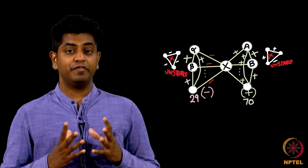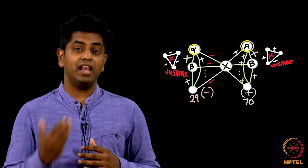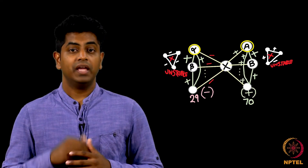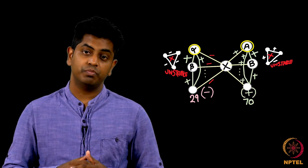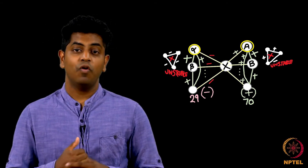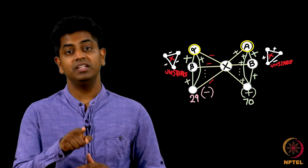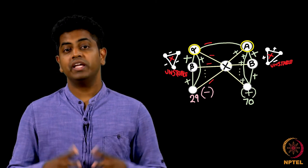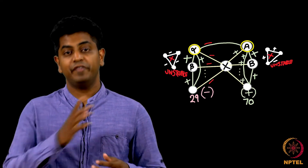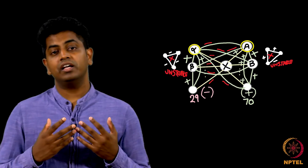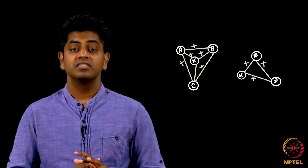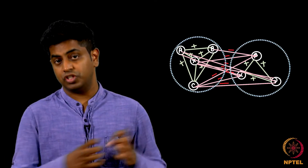But if you pick a friend A of X and a negative neighbor alpha of X — where X-A is positive and X-alpha is negative — what is the relationship between A and alpha? One positive, one negative, which means A and alpha should be negative. So, all the friends X is adjacent to positively are friends with each other with positive friendship. All the people X is adjacent to negatively are all friends with each other — which means there are two clusters. The cluster of X and all his positive friends are all positive within, and all the negative friends of X are all positive within, but negative across.